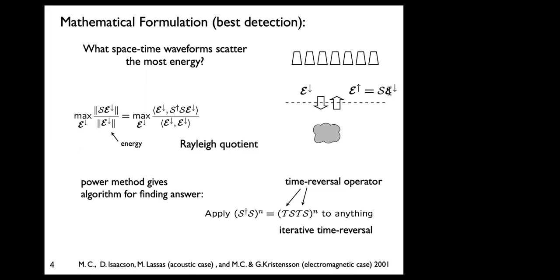To maximize the up-going energy, we need to normalize by the energy of the incident wave — otherwise the answer is always to put in all the energy in the universe, which is unrealistic. When we write this out using inner products and move the scattering operator to the other side with its adjoint (using a dagger for the adjoint in physics notation), we end up with an expression that all mathematicians will recognize as a Rayleigh quotient.